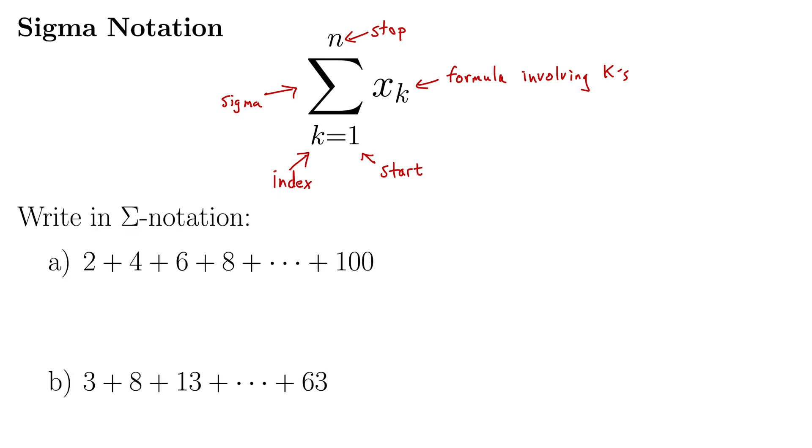So let's try it out. Here are a couple of examples. It says write in sigma notation and part a gives 2 plus 4 plus 6 plus 8 plus dot dot dot, which means we just keep going, plus 100. That's pretty cumbersome to write. Well we can see that it's essentially going by 2's here. So we write our sigma notation, there's our sigma.